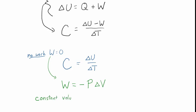This is a constant volume situation. If you have an ideal gas at constant volume and you ask what is the heat capacity of that gas, it's equal to simply the change in thermal energy divided by the change in temperature, which equals Nf over 2 times k, assuming the ideal gas obeys the equipartition theorem. We often write this as C sub V, where V refers to the fact that this is the heat capacity at constant volume.